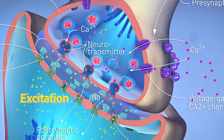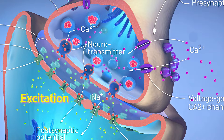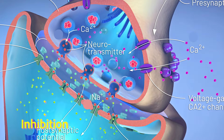If it's an excitatory neurotransmitter, it's going to bring that second cell closer to what we call depolarization, meaning it's more likely that an electrical impulse will start down that second cell. If it's an inhibitory neurotransmitter, it's going to make it less likely that depolarization will occur.